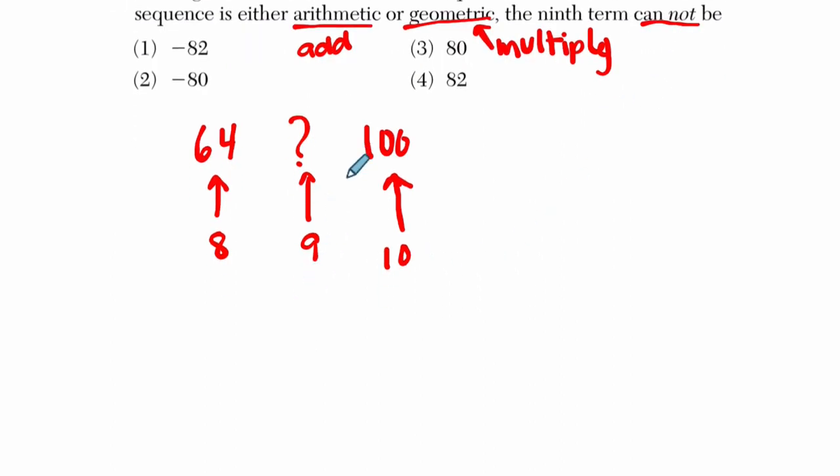So how am I going to do that? Let's do the arithmetic first. 100 minus 64, that's 36. That tells me these two are 36 apart. This is a distance of 36 by adding. So the question is, what's halfway in between?